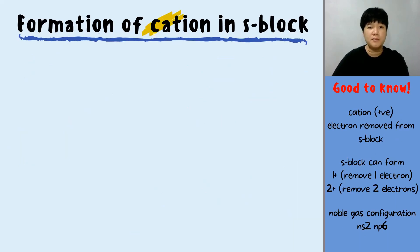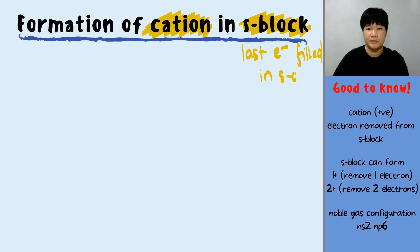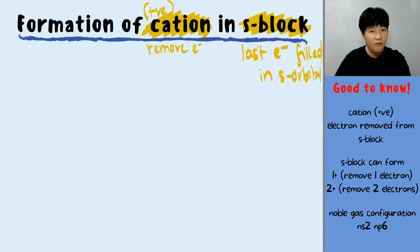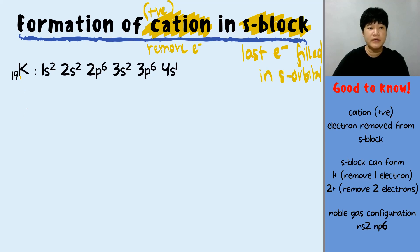We are going to look at the formation of a cation in the S-block, meaning the last electron is filled into the S-orbital. The first example is potassium, which has 19 protons. A neutral potassium atom has 19 electrons, and looking at the SPDF notation, the valence electron is 4s1.